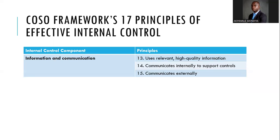Principles thirteen, fourteen, and fifteen map to information and communication. Principle thirteen: use relevant, high-quality information. People need information to act, so you need training and regular awareness for everybody in the organization. Risk management should be inclusive — everybody needs information to make decisions. Principle fourteen: communicate internally to support controls. People need information to know what to do, and even people who know can forget or take things for granted, so training, awareness, and communication must be continuous.